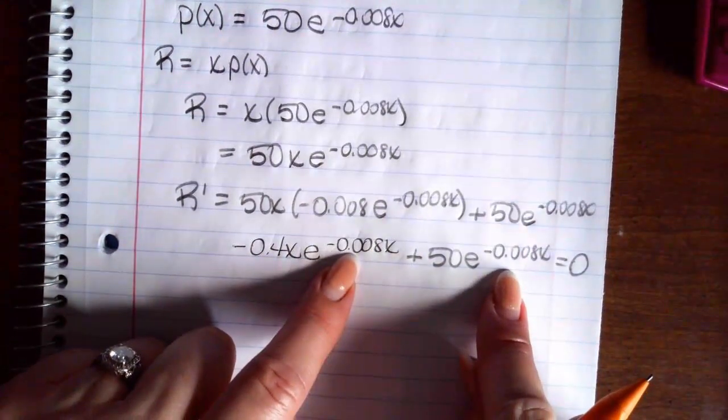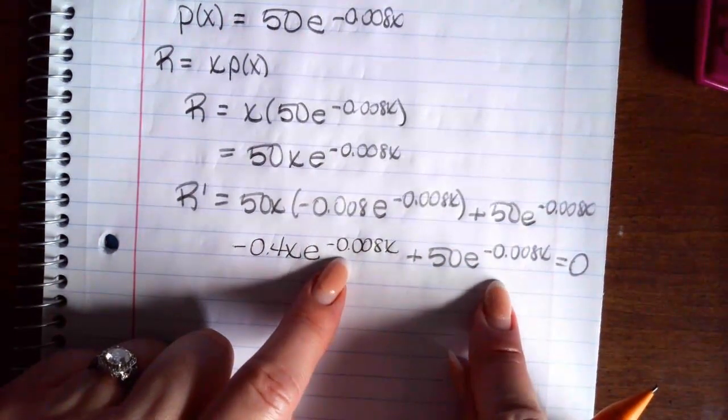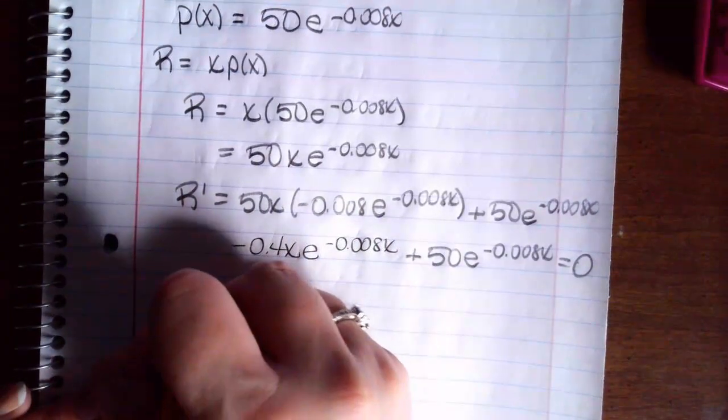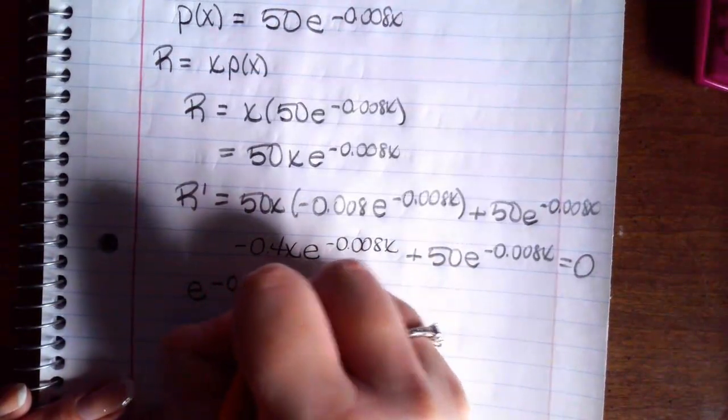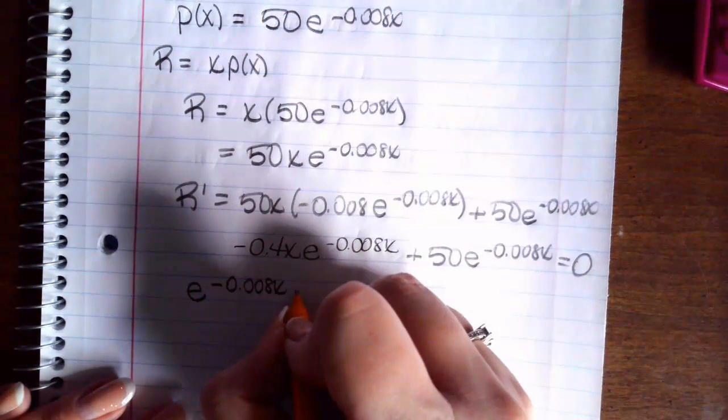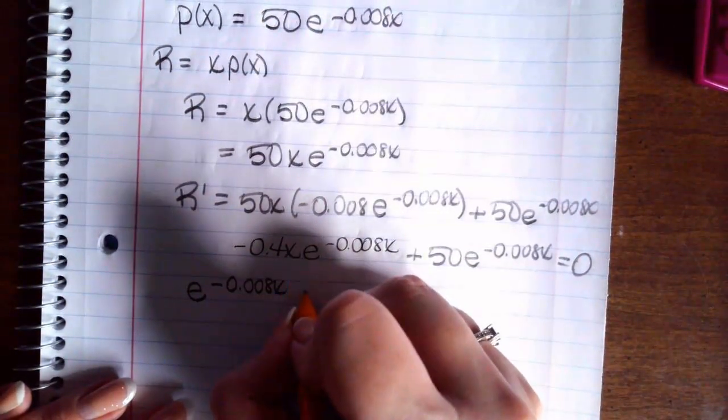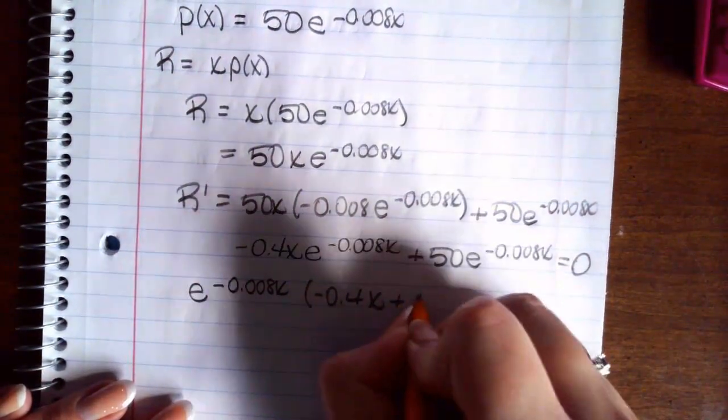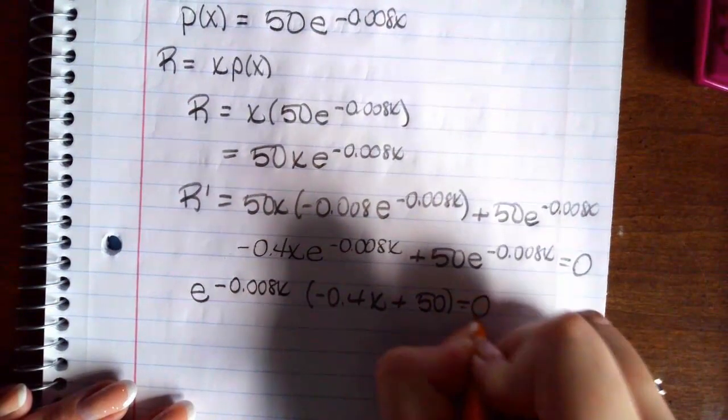Okay, so I see that both of these terms have an e to the that matches. So I'm going to factor out an e to the negative .008x. And that's going to leave me with negative .4x plus 50 is 0. So take each factor.